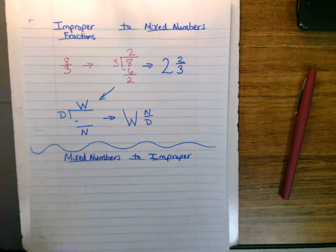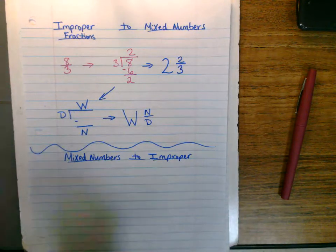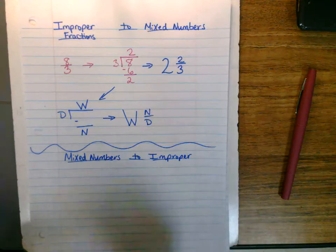Okay, is what our improper fraction eight-thirds is equivalent to, and to make it a mixed number, two and two-thirds.